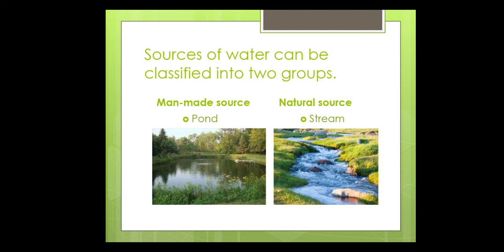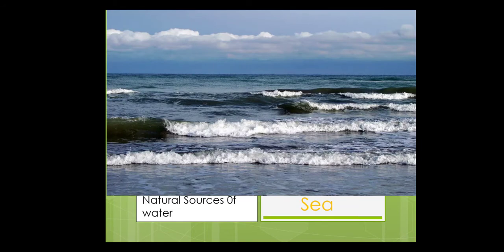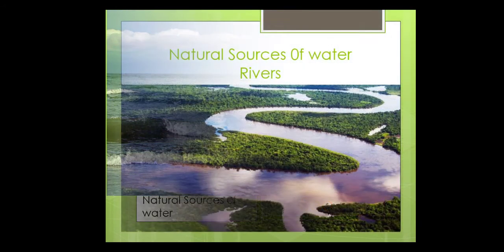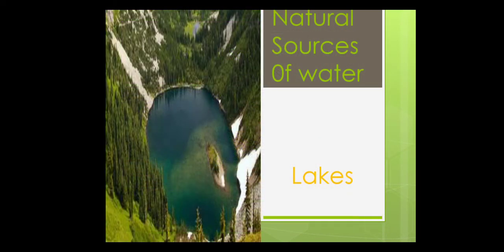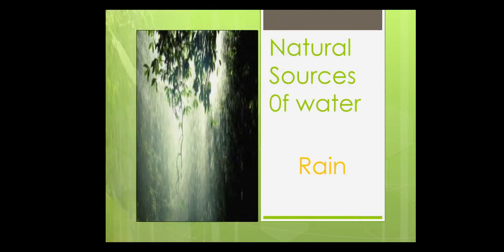Man-made sources are those sources of water which are made by men, like pond. On the other hand, natural sources of water are those sources which are made by nature, like sea, rivers, lakes, rain water, etc.